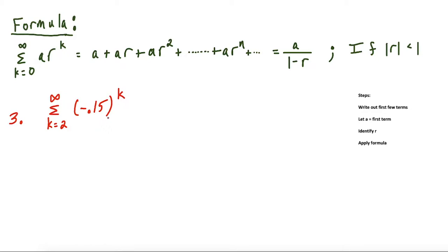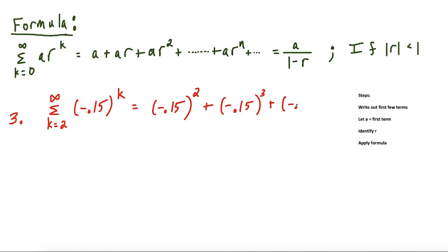For the last question, we have negative 0.15 to the k power, the sum from two to infinity. We're starting at a value that's not zero, but as long as we follow these steps we'll be okay. This series fits the formula's requirements — the absolute value of negative 0.15 is 0.15, which is less than one. Expanding the first few terms: we have negative 0.15 to the second power, because we're starting at k equals two, then plus negative 0.15 to the third, and this goes on to infinity. The first term — our a value — is negative 0.15 squared, and our r value is negative 0.15, since we're multiplying by negative 0.15 each time.